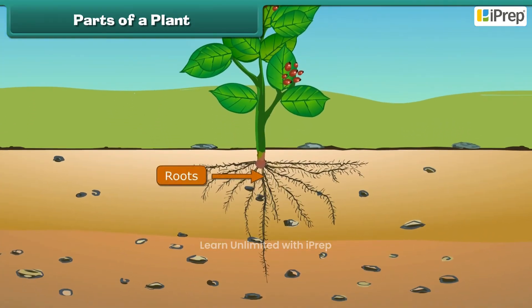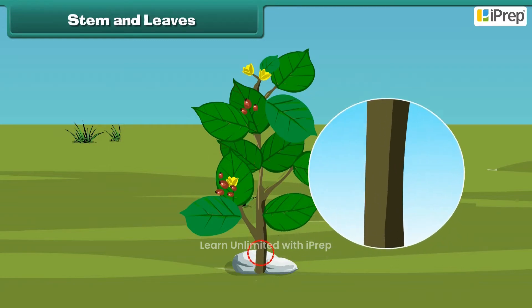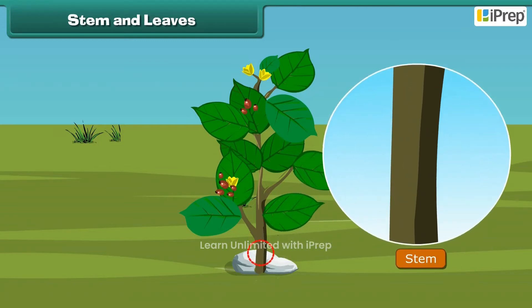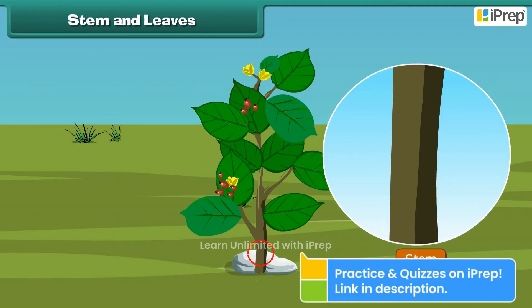Roots are the lower part of a plant. They grow in soil and help the plant get water and minerals from the soil. The next part is the stem — a stem is the hard part of the plant which grows above the ground. It bears leaves, roots, and flowers.